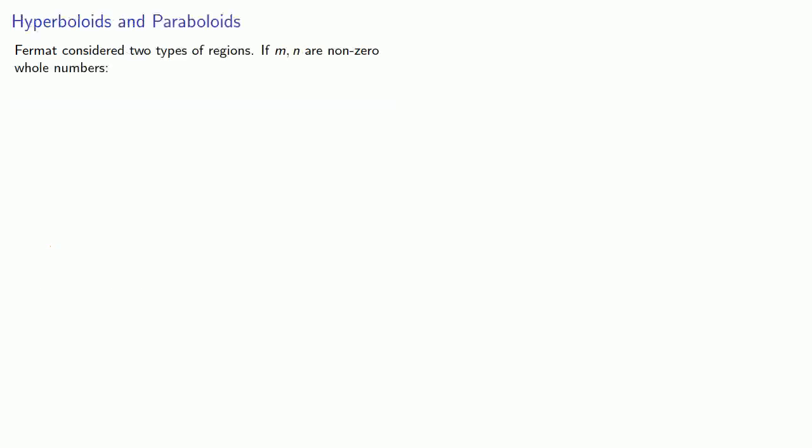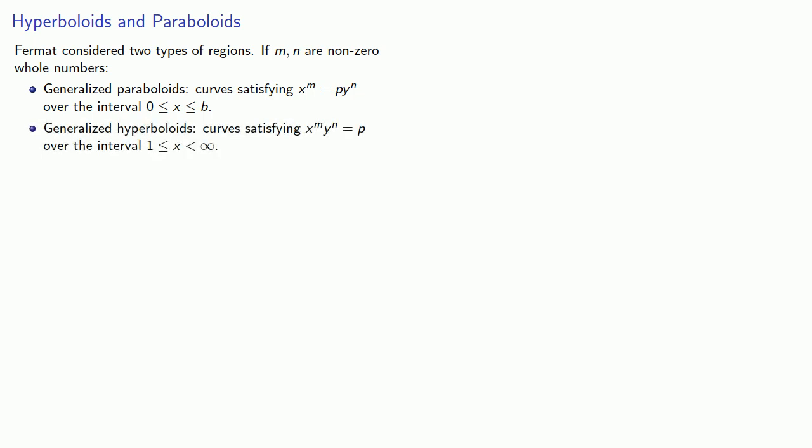Fermat considered two types of regions. If m and n are non-zero whole numbers, we can consider generalized parabolas, these are curves satisfying x to the m equals p y to the n over the interval between 0 and b, and generalized hyperboloids, curves satisfying x to the m y to the n equals p over the open interval from 1 to infinity.